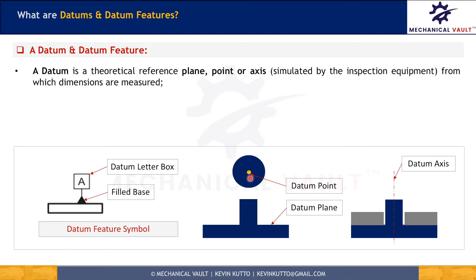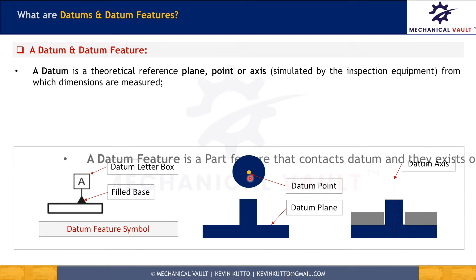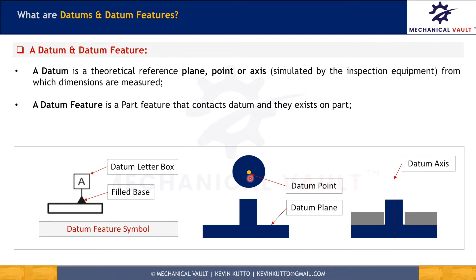Datums are established by using datum features. A datum feature is a feature on the part that contacts the datum and exists on the part in consideration. Note that we cannot use any random feature as a datum feature — it must meet three criteria to be the right choice.